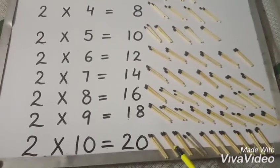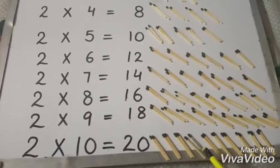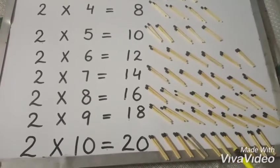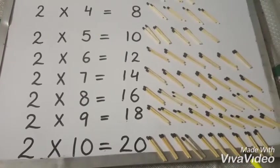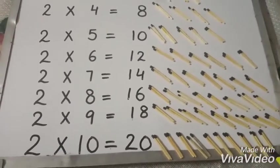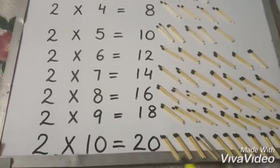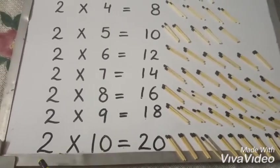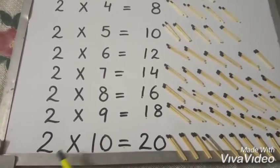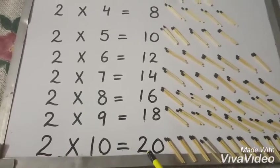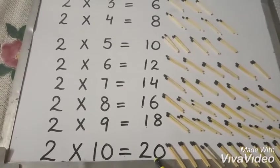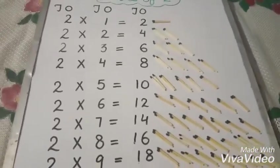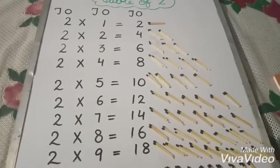One, two, three, four, five, six, seven, eight, nine, ten, eleven, twelve, thirteen, fourteen, fifteen, sixteen, seventeen, eighteen, nineteen, twenty — it means two ten times, we will call two tens are twenty. This is the way you can learn the table of two.